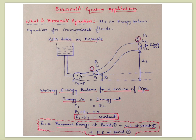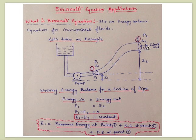The pump is delivering pressure, meaning pressure energy is being inserted into this pipe. The cross-sectional area at point 1 is A1, pressure is P1, fluid velocity is V1, and elevation from the ground is Z1. At point 2, the elevation is Z2, cross-sectional area is A2, pressure is P2, and fluid velocity is V2. We now write the energy balance for this section of pipe.